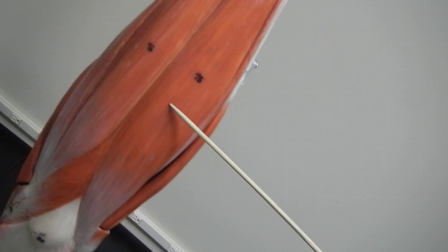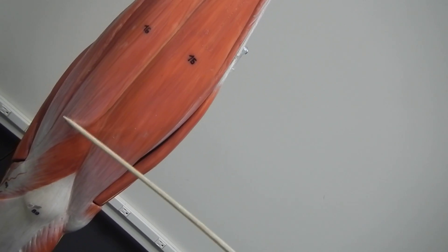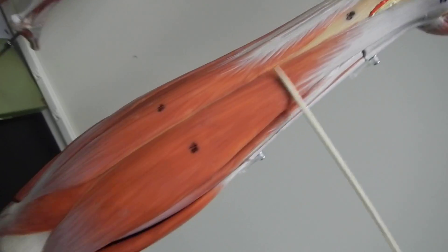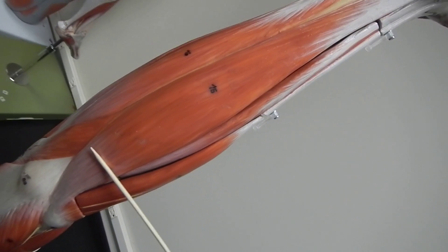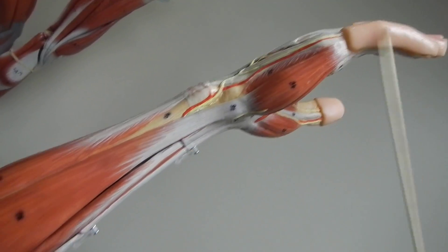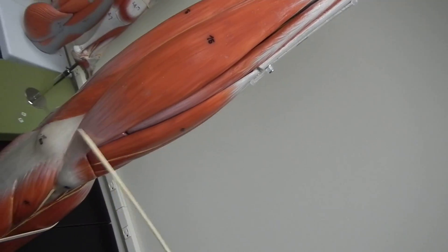These two I like to group together. They're ulnaris. So this one on this side is extensor carpi ulnaris. This one on this side is flexor carpi ulnaris, and it goes to the pinky. You may want to just remember that, whichever way helps you out.